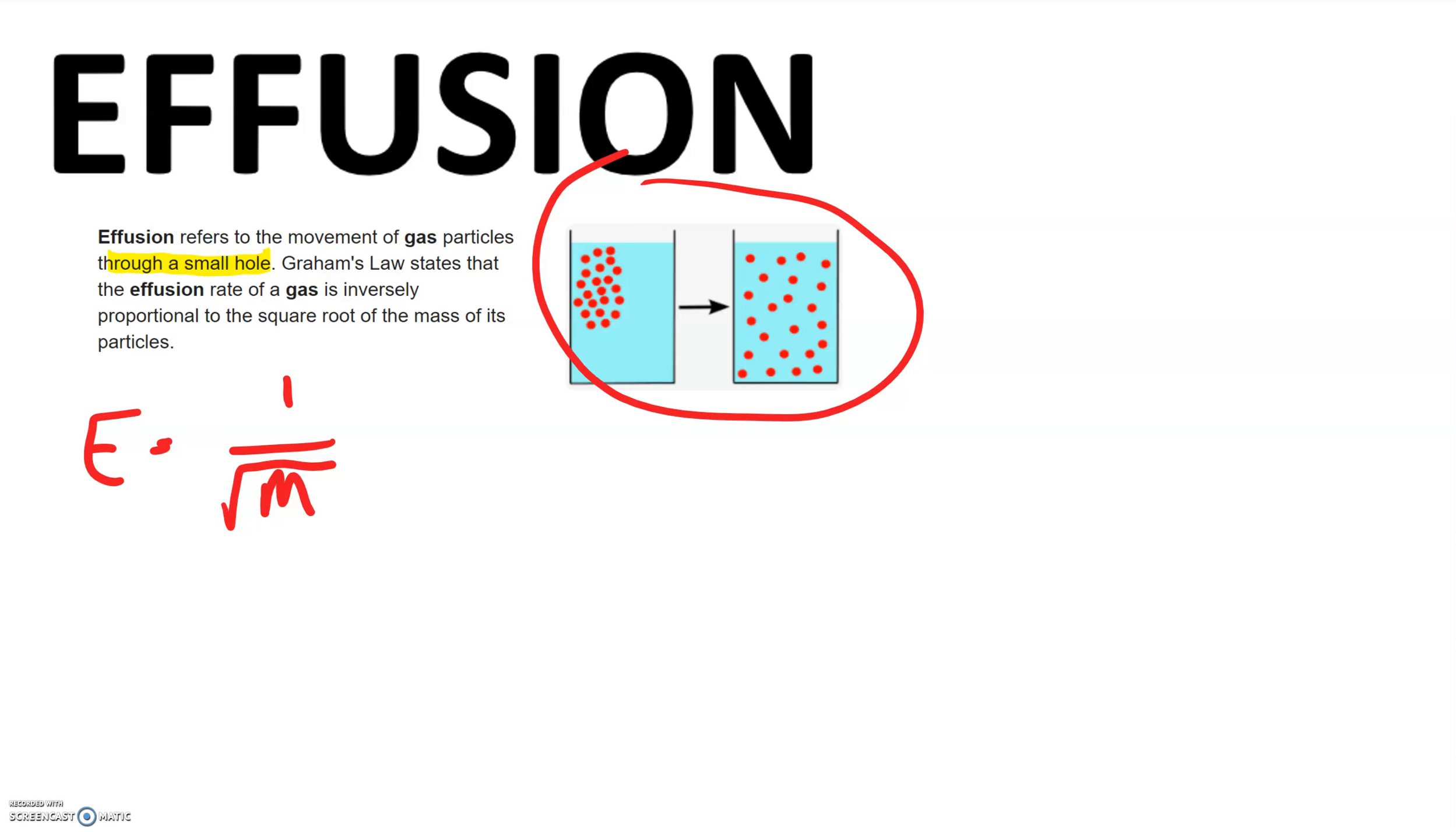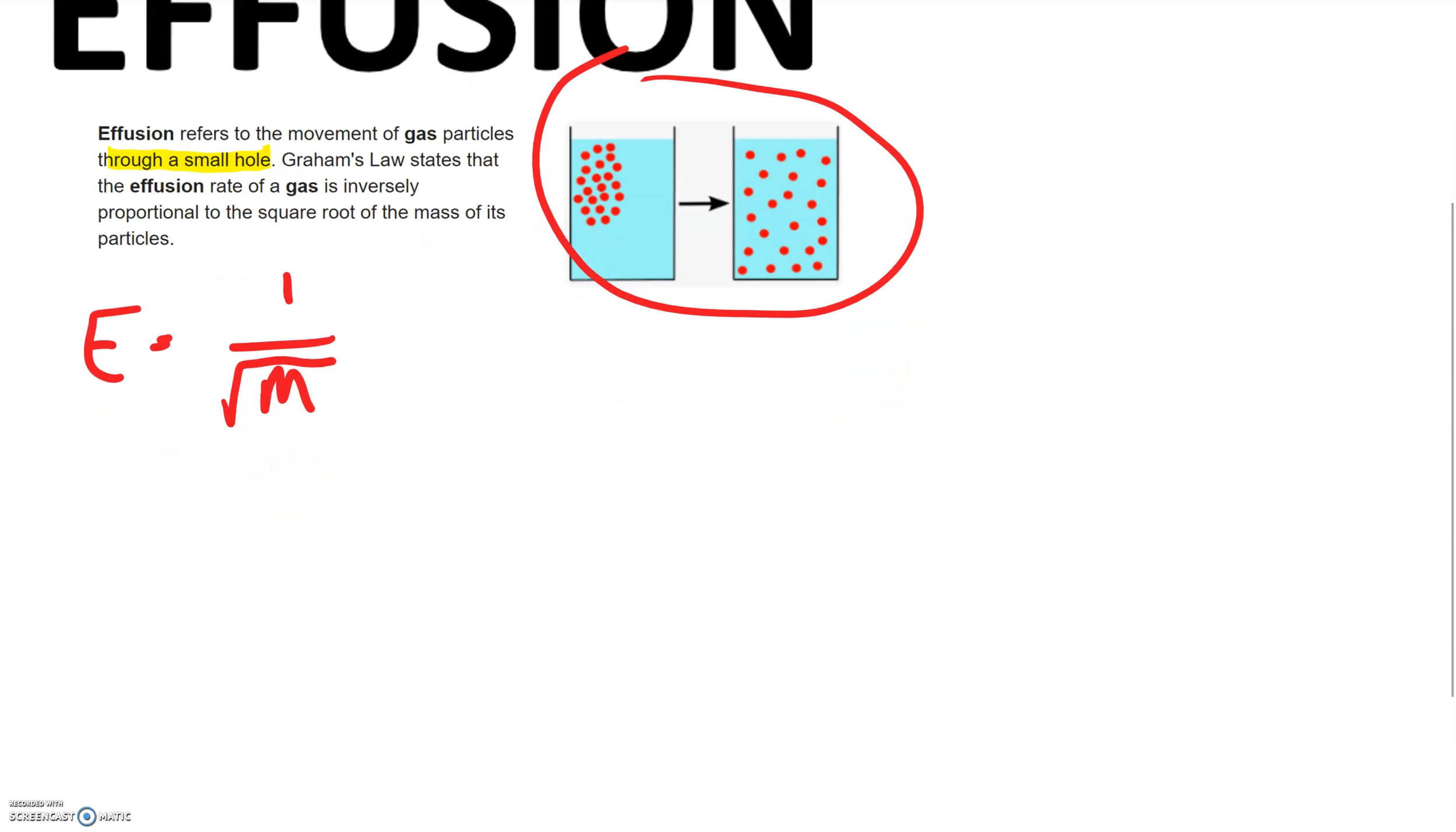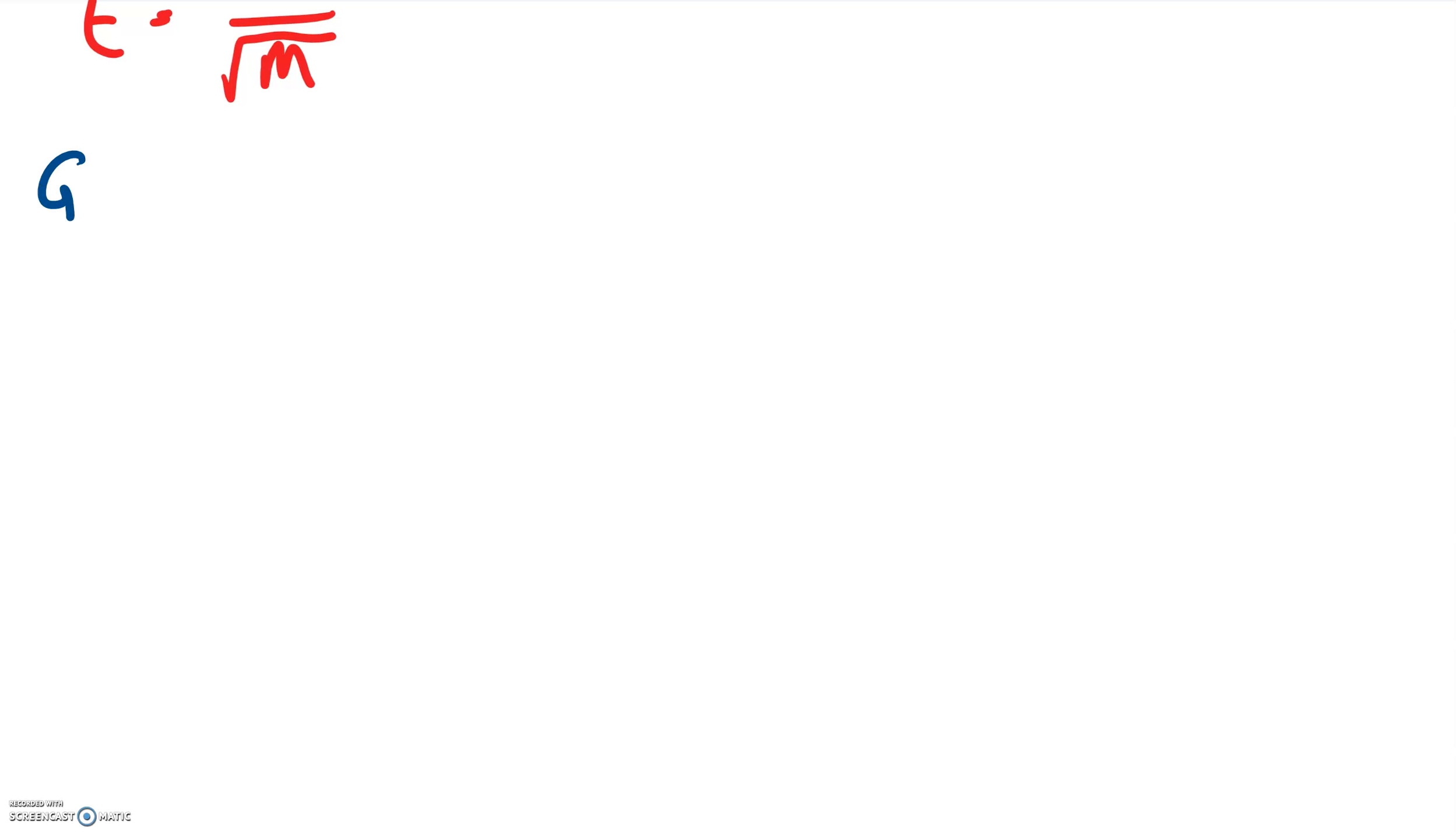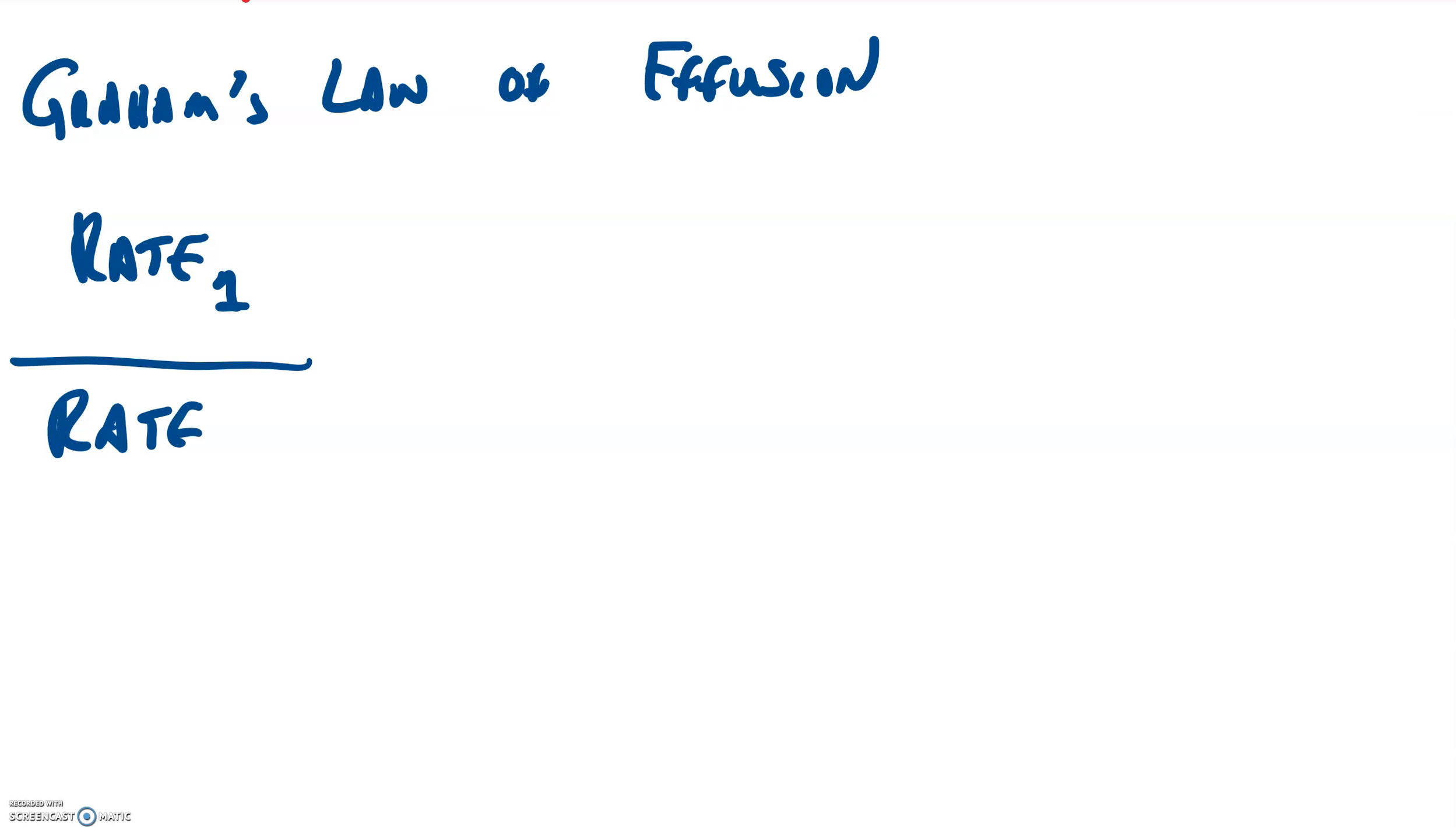We're going to be looking at what we're going to call Graham's Law of Effusion, and it's a really simple equation. If we were going to be comparing the rate of effusion of two different gases, we would say the rate for gas 1, as it effuses out through a container, versus the rate of gas 2.